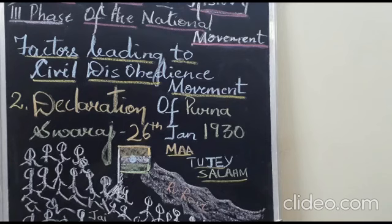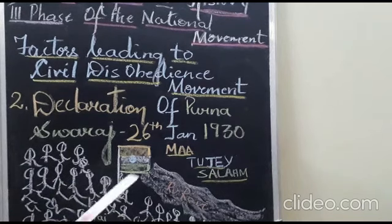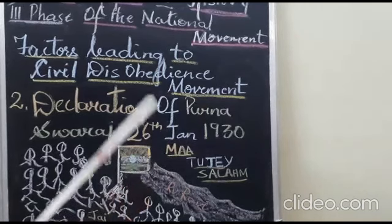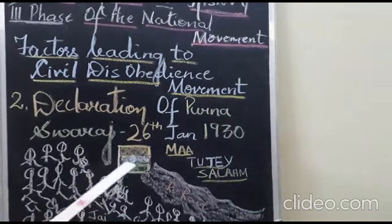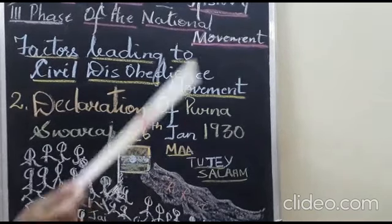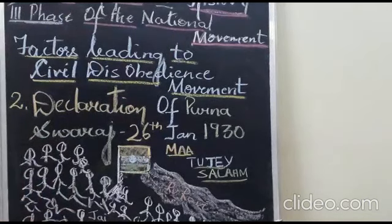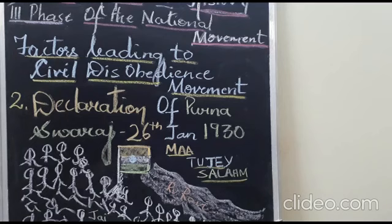The Congress Working Committee met in January 1930 and decided on several programs. The people followed Pandit Nehru to the banks of River Ravi and hoisted the tricolour flag on 26th January 1930. From that year, every 26th January was considered Independence Day. The programs included preparation for the Civil Disobedience Movement, setting Poorna Swaraj as a goal, and observing 26th January as Poorna Swaraj Day by hoisting the tricolour flag.